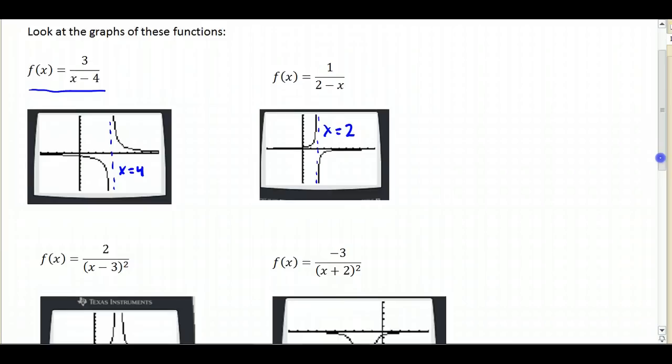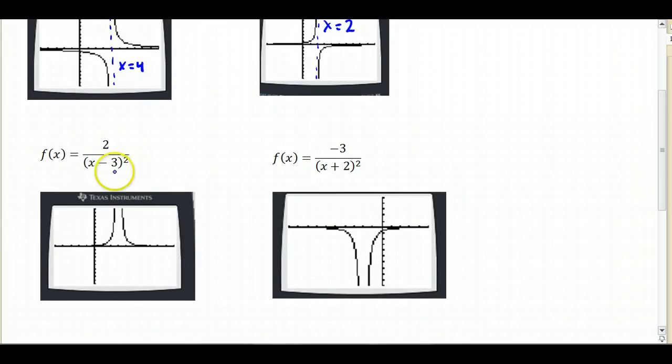Here we have the graph of 2 over x minus 3 squared, and we have a vertical asymptote at x equals 3, and finally negative 3 over x plus 2 squared, we have a vertical asymptote at x equals negative 2.